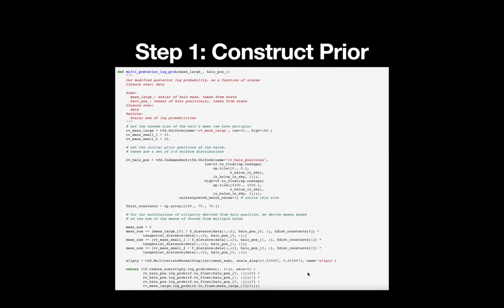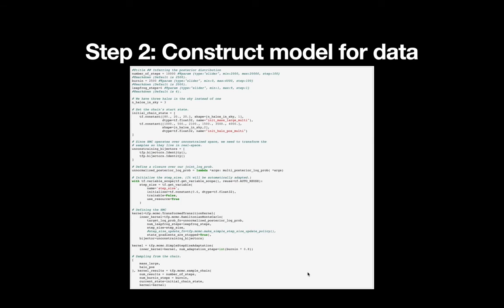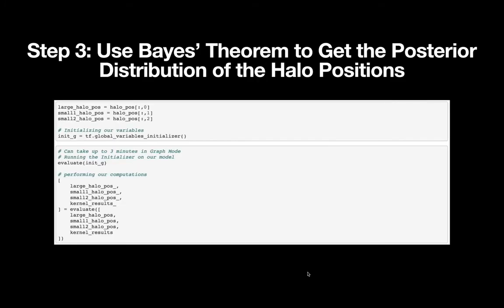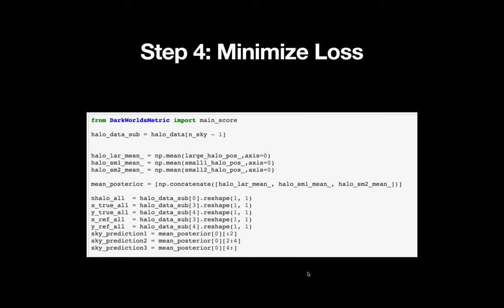So in the first step, like I said, we construct some prior, and we have a function where we construct this multi-posterior log probability for all of the halos in the sky. In the second step, we're going to construct some model for the data. And in this case, the kernel, we're using this TensorFlow Probability, this transformed transition kernel. And in the third step, we're going to use Bayes' theorem to get this posterior distribution for all the halo positions. And finally, in the fourth step, we want to minimize our loss function to get the most accurate prediction that we can.